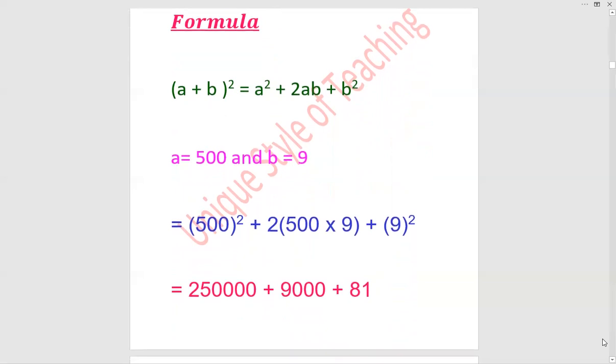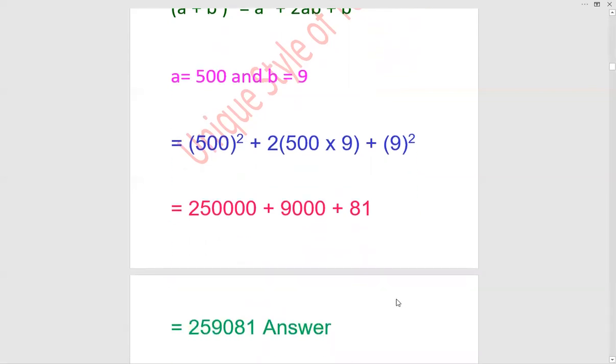500² is 250,000. 2 × 500 × 9 is 9000, plus 9 × 9 is 81. When we sum these up, the answer is 259,081. This is your answer in simplest form.